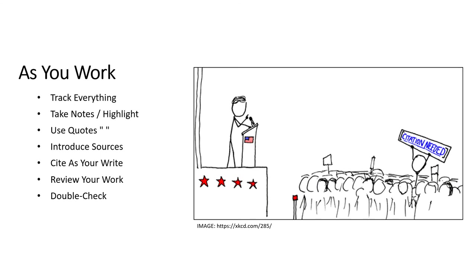As you work, make sure to keep citations and attribution in mind to help avoid plagiarism. You should track everything you visit or use. Citation trackers like Zotero can be useful. You should also take notes and highlight passages you use so that you know to include a citation in your final product. Always put quotes around direct quotations from sources — this lets your readers know you are using someone else's work. You should also properly introduce quotes and any time you use another person's work as a paraphrase, summary, or example.